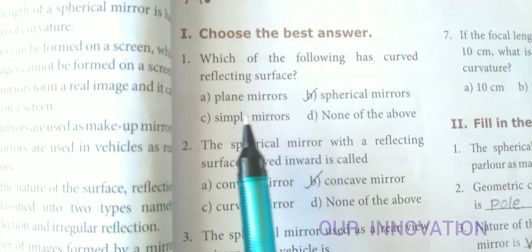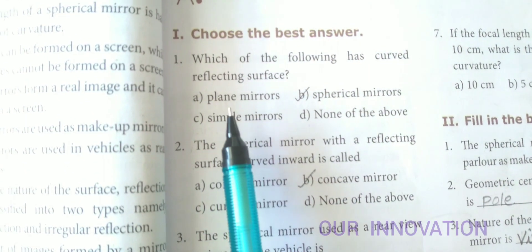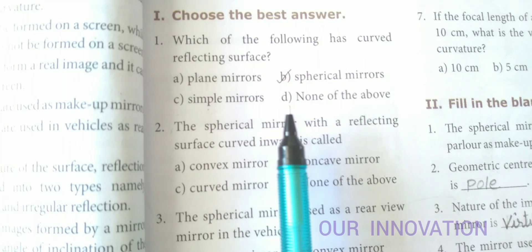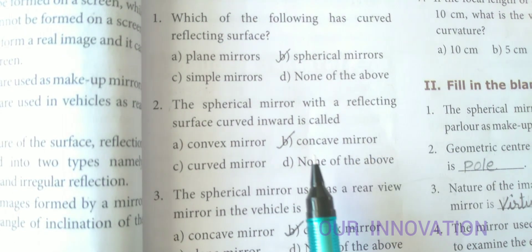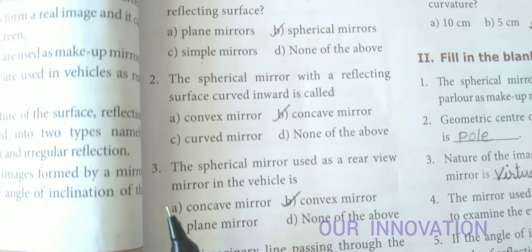Choose the best answer: Which of the following has curved reflecting surface? Answer is spherical mirrors. The spherical mirror with a reflecting surface curved inward is called concave mirror. The spherical mirror used as a rear view mirror in the vehicle is convex mirror.